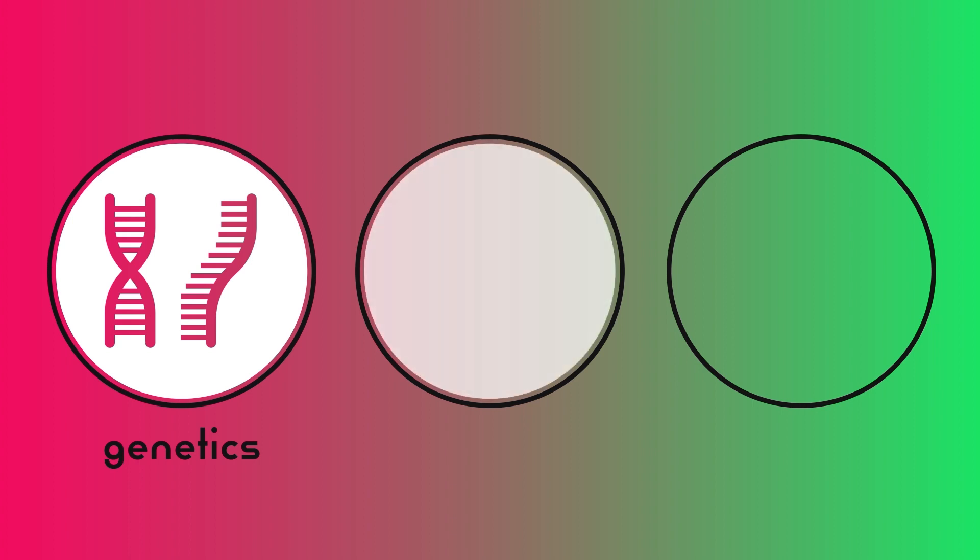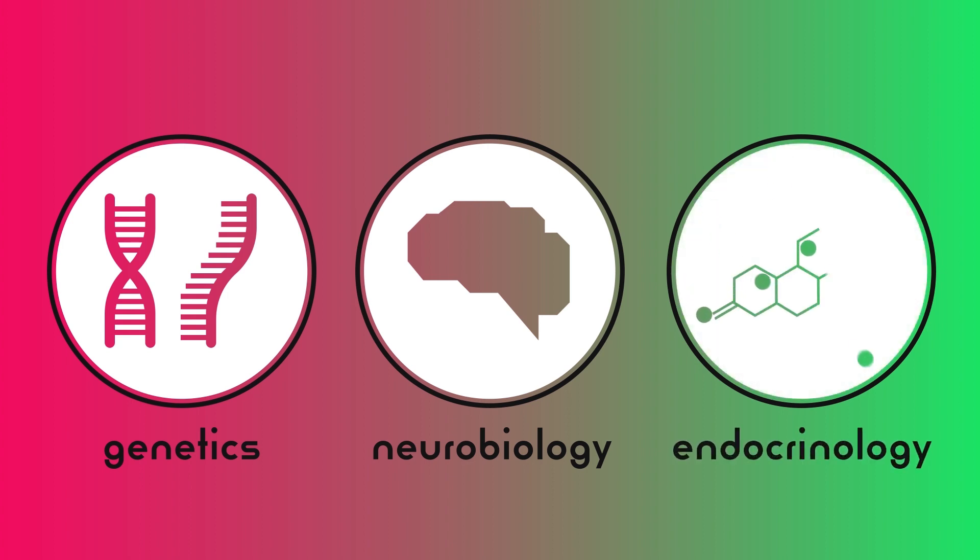The author writes that three subjects help explain the transgender experience: genetics, the instructions for biological processes; neurobiology, the structure and connections of the brain; and endocrinology, the influence of hormones on the body. The biological experience of trans individuals, like everyone else, can be affected by these three variables.